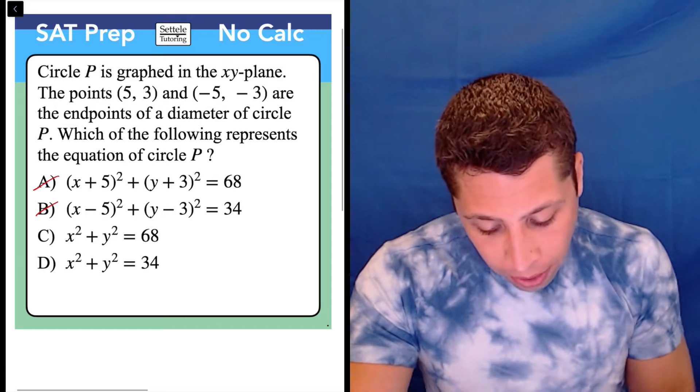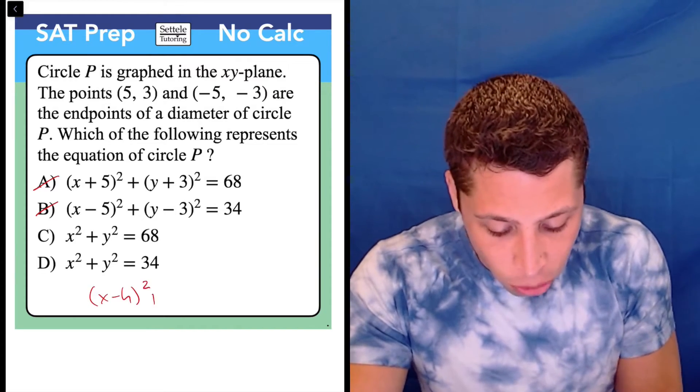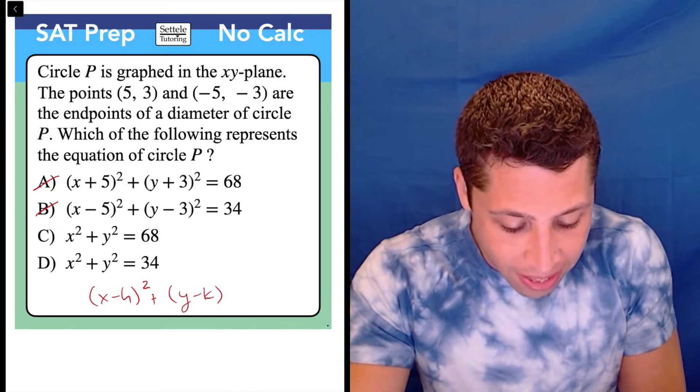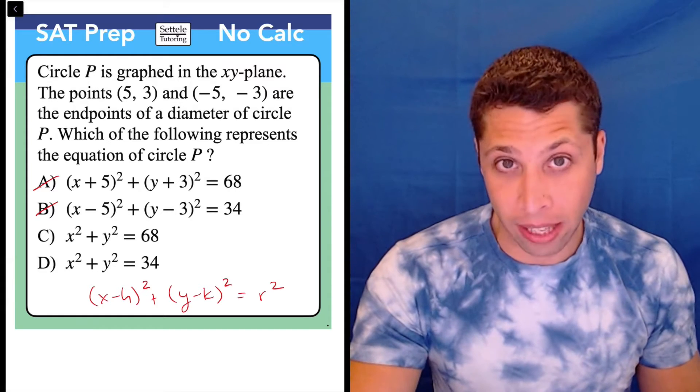Let me explain why. The main reason here is that the formula of a circle is going to be (x - h)² + (y - k)² = r², where h,k is the center and r is the radius.